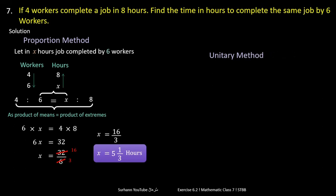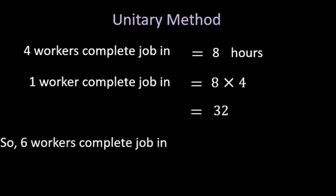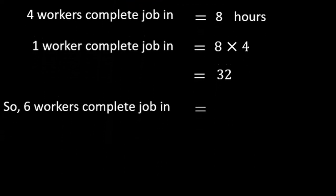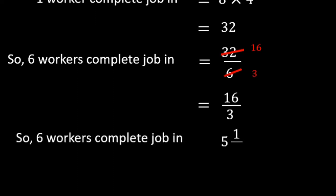By unitary method: 4 workers complete the job in 8 hours, so 1 worker would take 8 × 4 = 32 hours, because 1 worker takes more time than many workers. For 6 workers, divide 32 by 6, because more workers take less time to complete the job. So 6 workers will complete the job in approximately 5 hours.